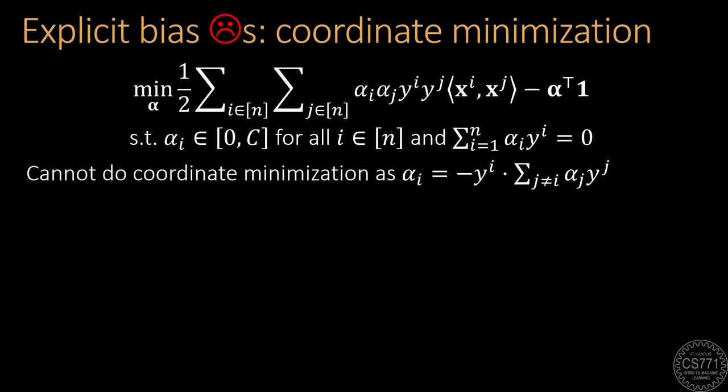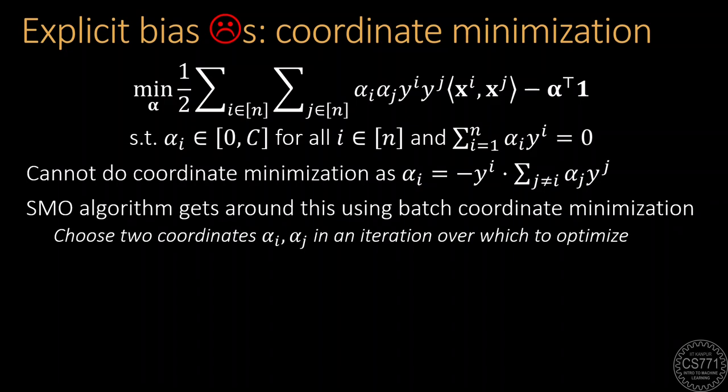One way to overcome this drawback is to perform batch coordinate minimization by optimizing over not one but two alpha coordinates in a single iteration. The SMO algorithm does this precisely. It is quite popular and implemented inside libraries such as scikit-learn.